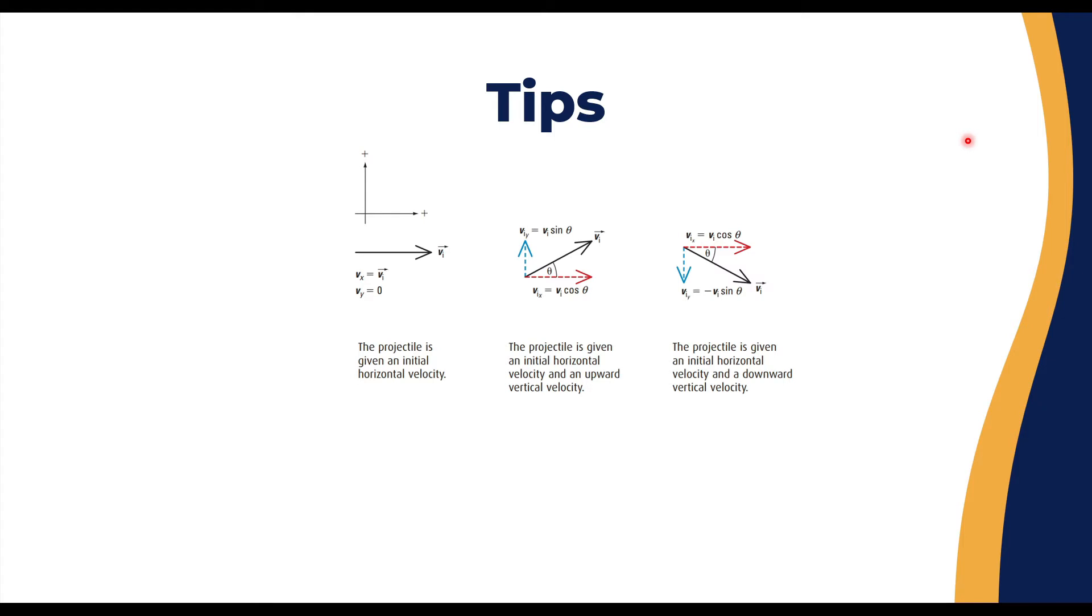Now let's have some tips before we go into an example and start to learn how to solve projectile motion, or specifically horizontal projectile motion. First, when you have v_initial going to the right, v_initial is represented as v_x. In this case, v_y is zero because the motion to the right on the x-axis isn't going upwards in any way.